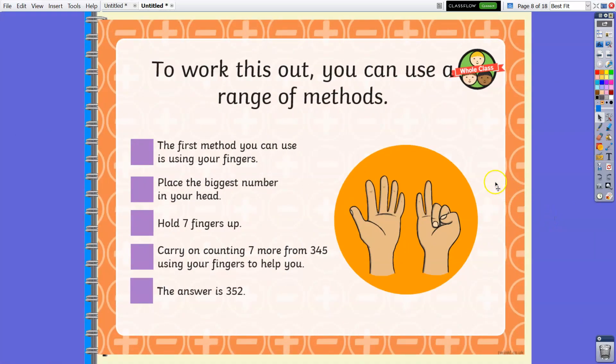To work this out, you can use a range of methods. The first one is using your fingers, but I'm trying to let you avoid this. Place the biggest number into your head, for example 345, then hold your fingers, seven fingers up.